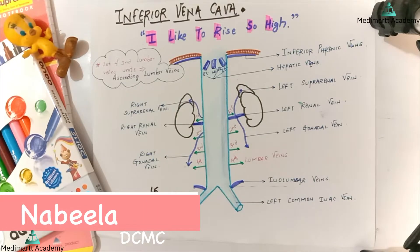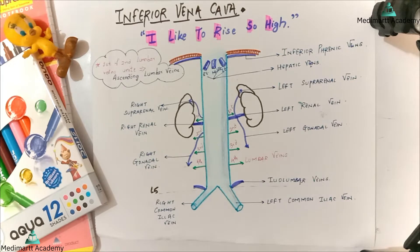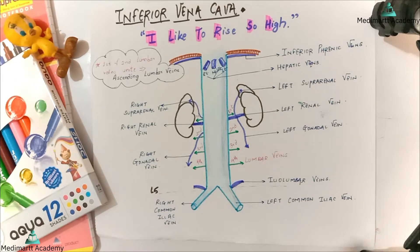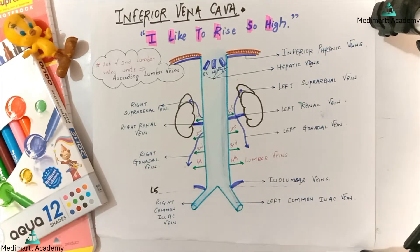In today's video I will be teaching you about the inferior vena cava and its tributaries. One thing to note is that whenever we talk about arteries or the aorta, they always have branches, and when we talk about veins or the vena cava, they always have tributaries. So without wasting much time, let's start.